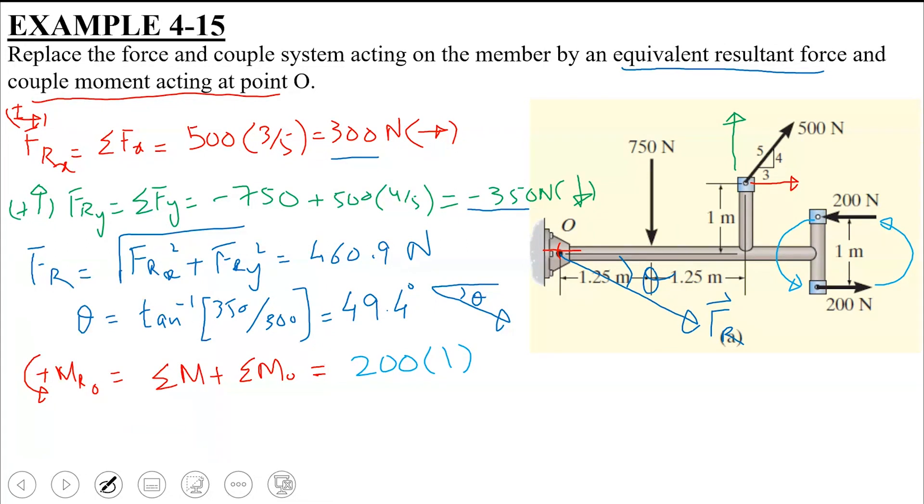What about summation MO? Sir, we have two forces. Two forces. For 750, sir. For 750, sir. How much is this? You can tell us, for perpendicular distance about point O, how much is it? For 750.